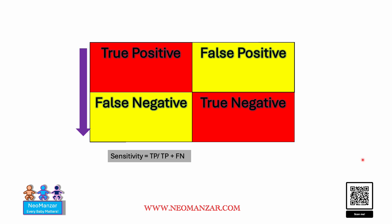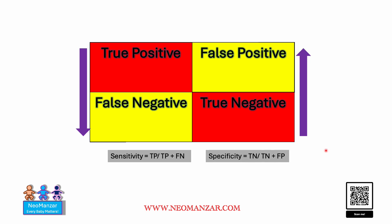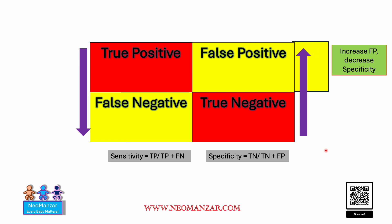The arrow goes this way for sensitivity, and for specificity it goes the other way — true negative divided by true negative plus false positive. So what happens when false positive rates increase? Increasing false positives decreases your specificity, because the denominator in the formula contains false positive. The same goes for false negative — increasing false negatives decreases sensitivity, because the denominator contains false negative.